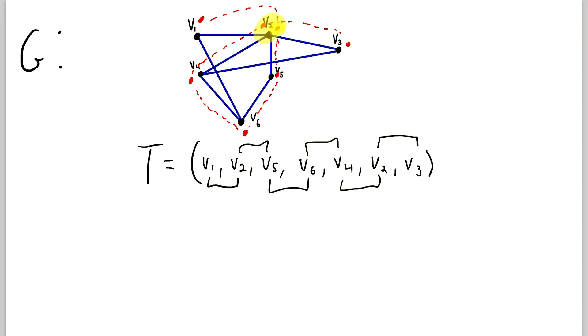You can traverse the same vertex multiple times, which we did. We visited the vertex V2 twice. But the first time we visited V2, we were going across this edge, and the second time, we were going across this edge. So it's still a trail, because we didn't traverse any edge more than once.